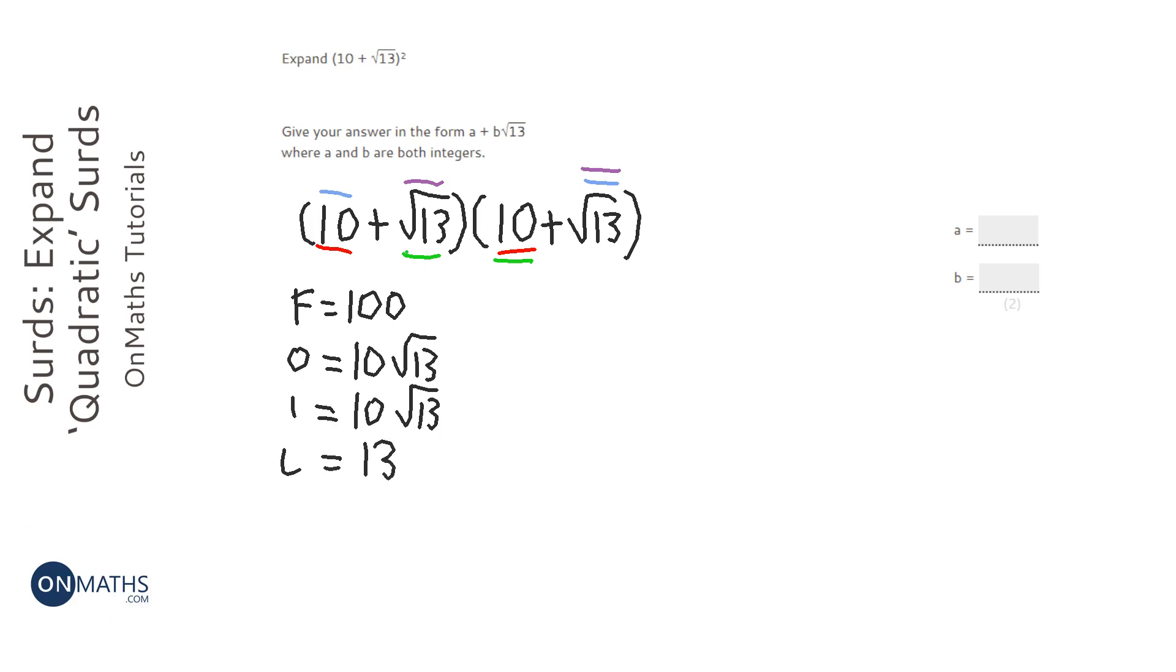So you might notice that these two will add together. They're what we call in algebra like terms. And these two can add together. So we're going to end up with 100 plus 13, which is 113,